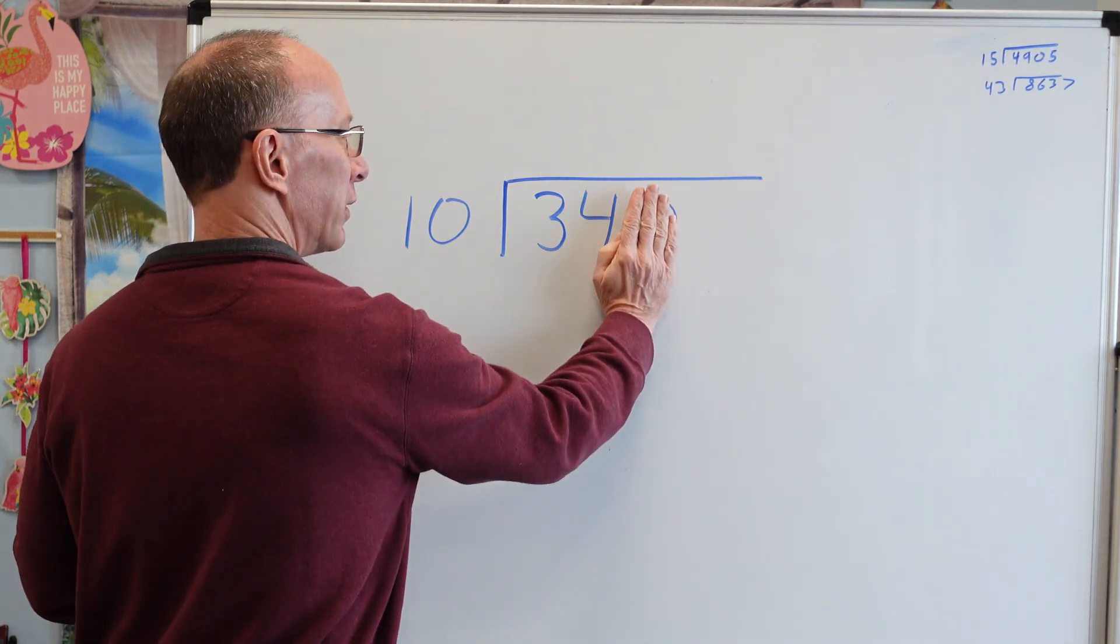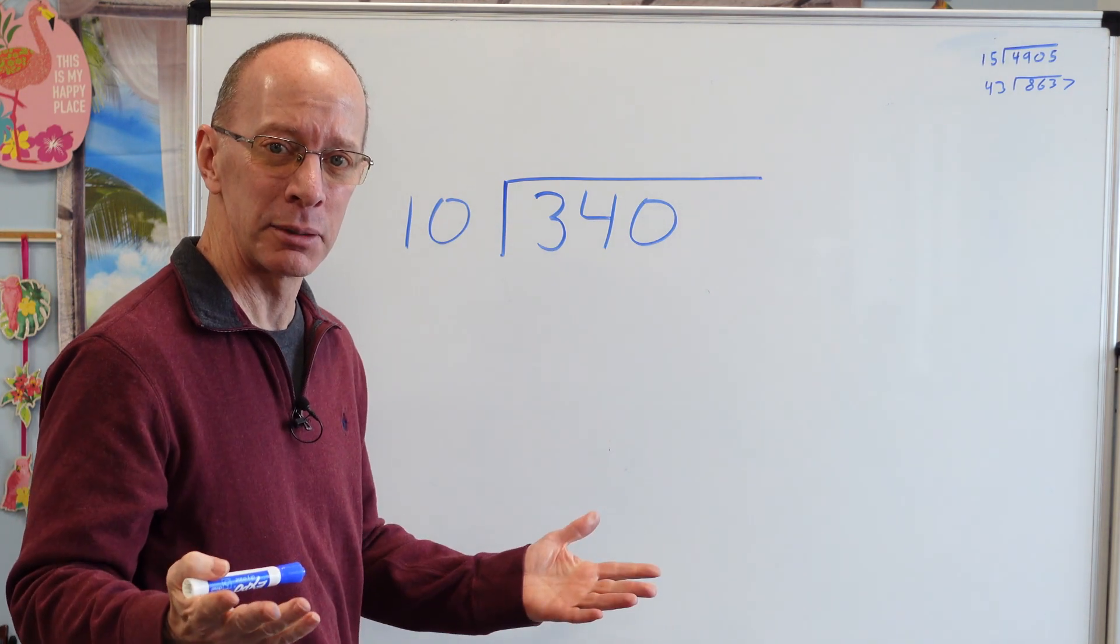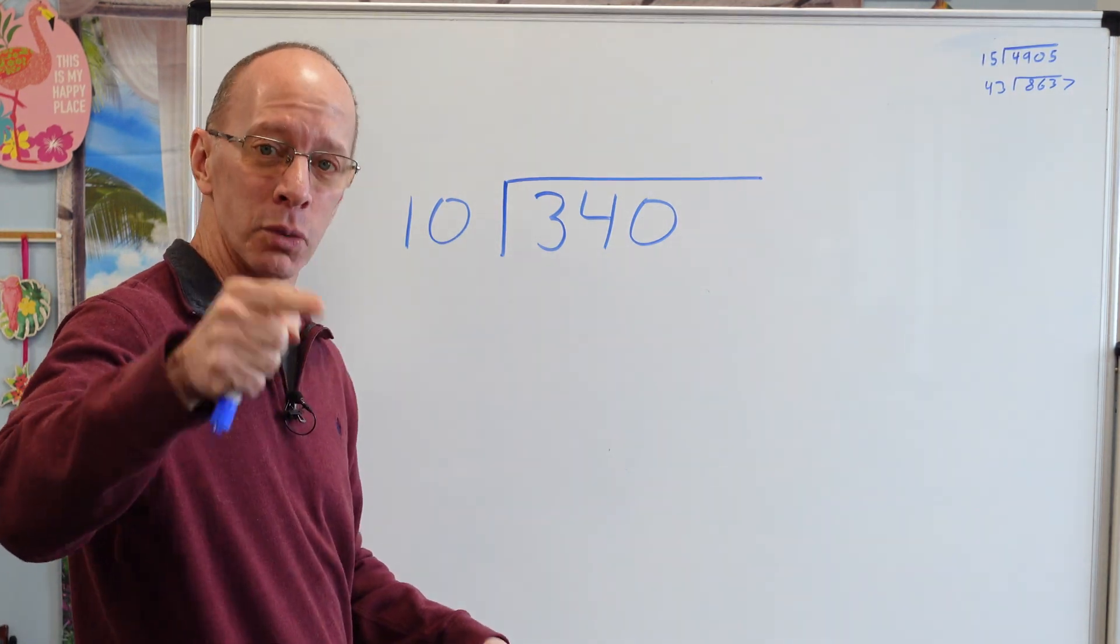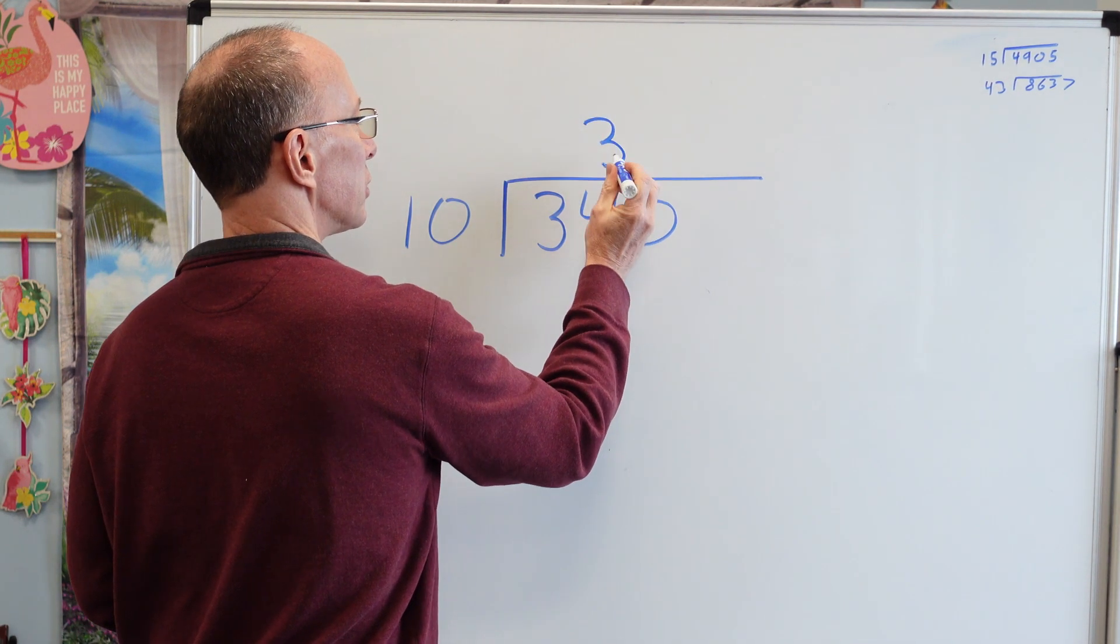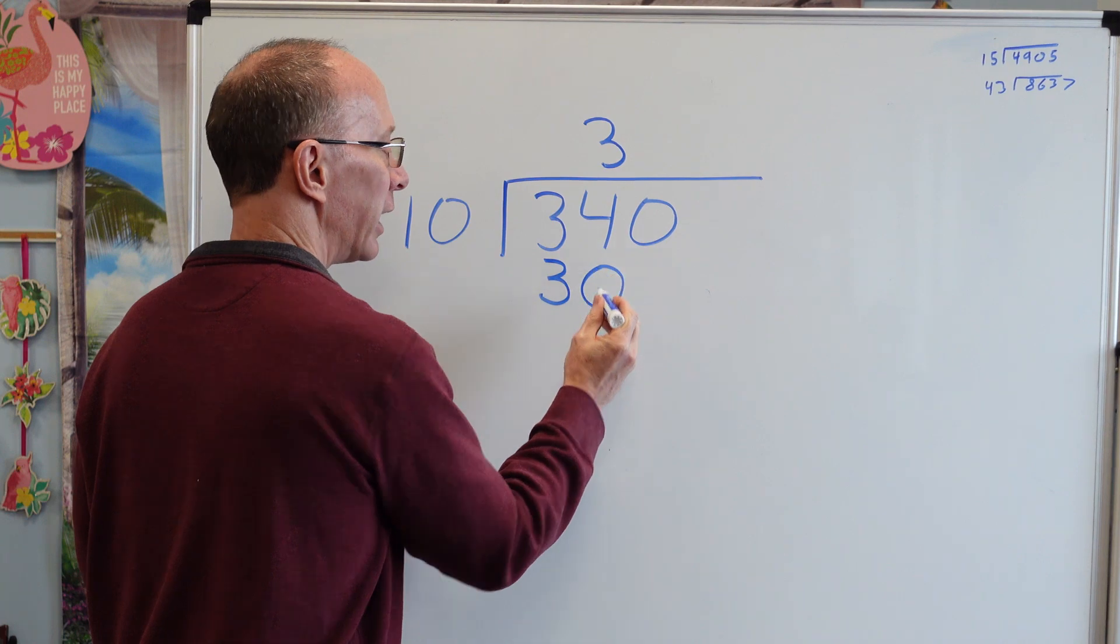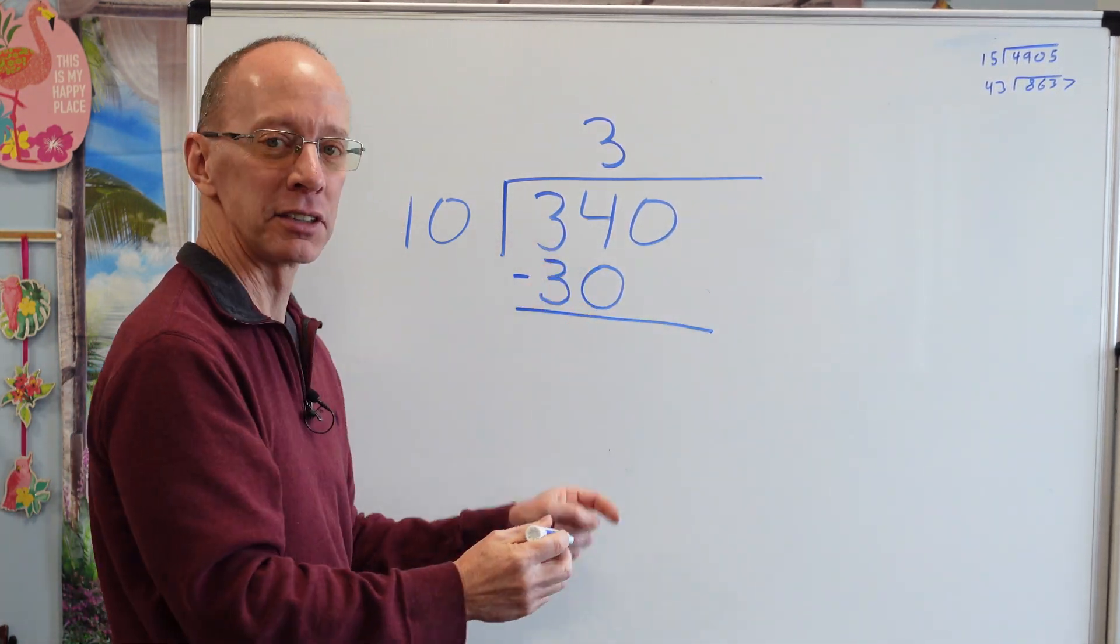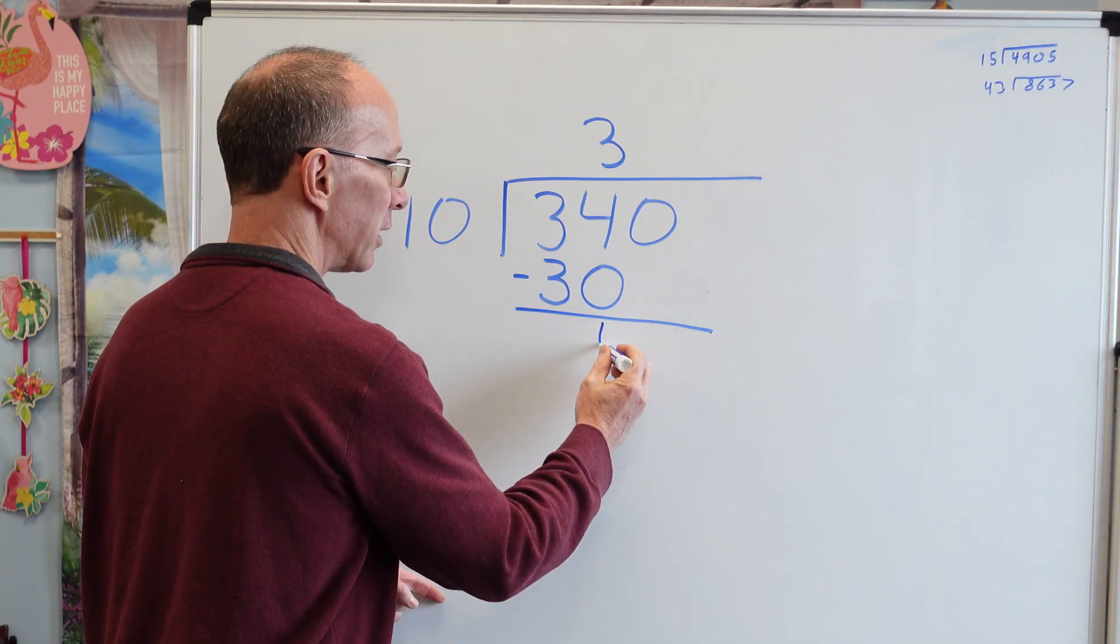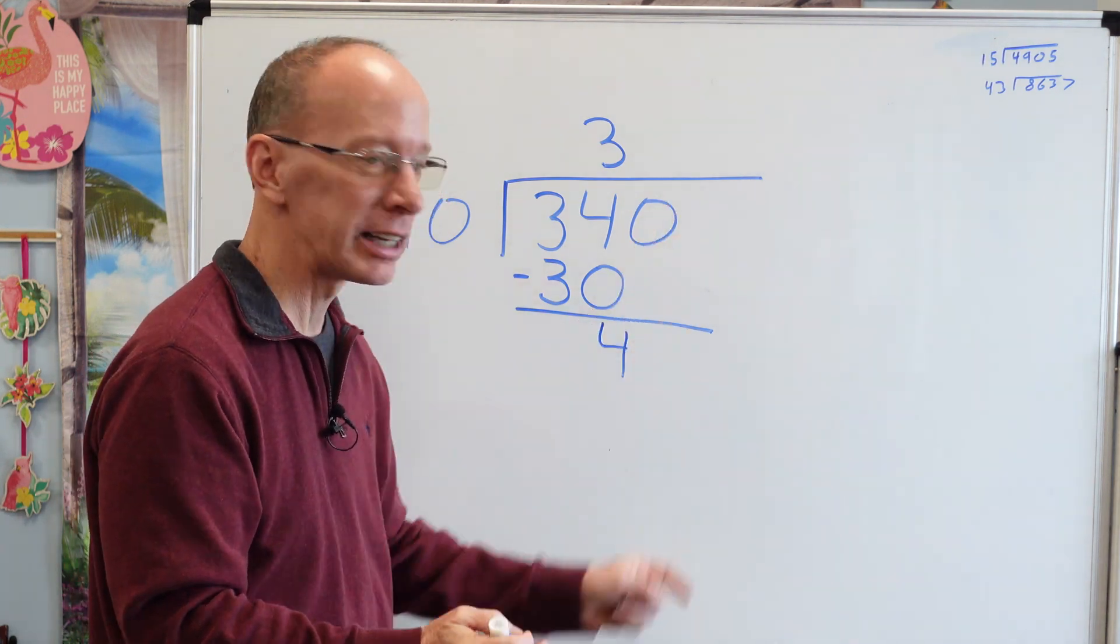You can cover up some of the numbers if you want to. Can I put 10 into 34? You can. How many times? 3. 10, 20, 30. So I put the 3 right here. So 3 times 10 equals 30. My next step is subtraction. And 4 minus 0 is 4, so I just bring that right down here. And then I bring the next number down.